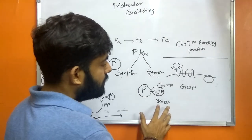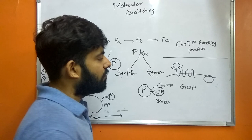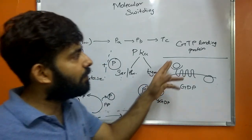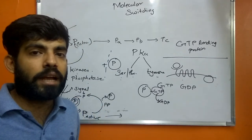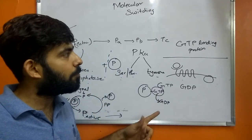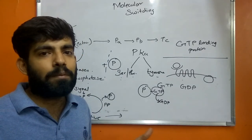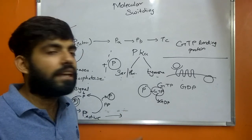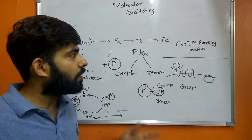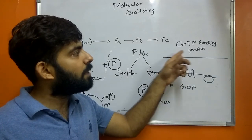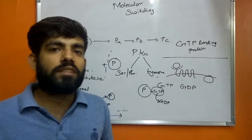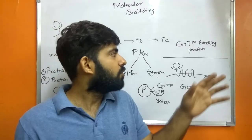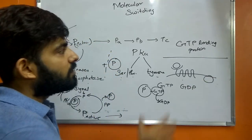The GTP to GDP conversion is due to the GTPase activity. GTP-binding proteins are further of two types: the large trimeric GTP-binding proteins and the small GTP-binding proteins. The function of both types is generally relaying of the signal through the proteins, but the small GTP-binding proteins also function in regulating vesicular traffic.